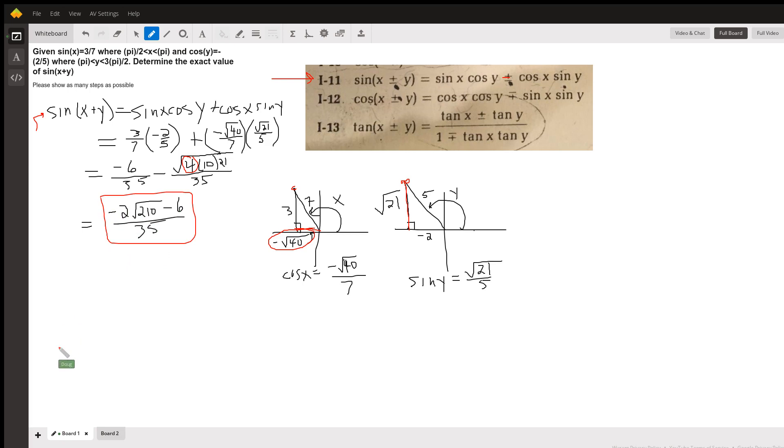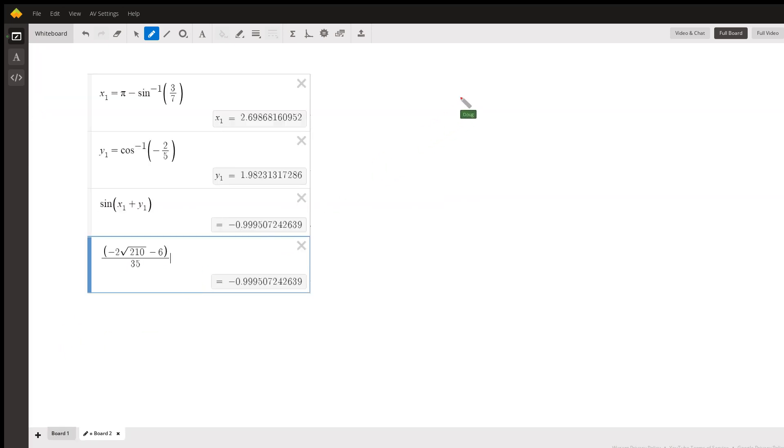And if I go to board 2, here's the kind of proof that this works. x sub 1 is the angle that has a sine of 3 sevenths, except we have to subtract that from pi because again we're in the second quadrant over here. So this angle has a sine of 3 sevenths.